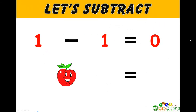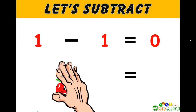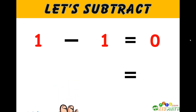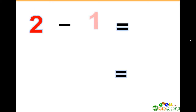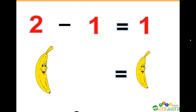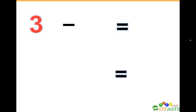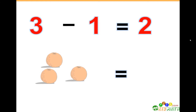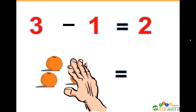1 minus 1 equals 0. If we have one apple and we take away that one apple, we have zero apples left. 2 minus 1 equals 1. If we have two bananas and we take away one banana, we have only one banana left.